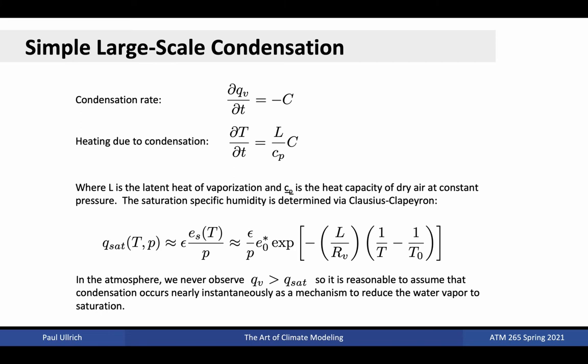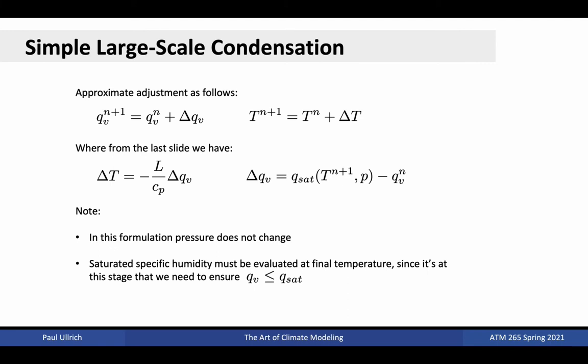Condensation occurs whenever the specific humidity exceeds the saturation-specific humidity, which is a function of temperature and pressure at the bottom of this slide. For simplicity, we will assume that the condensation process occurs instantaneously. This means that the specific humidity and temperature will experience an instantaneous adjustment whenever the parametrization is evaluated. We will denote this adjustment by delta Q and delta T. Note that delta Q is always negative and delta T is always positive. From the last slide, we have that delta T is a function of delta Q via the relationship shown here. More condensation corresponds to more warming.